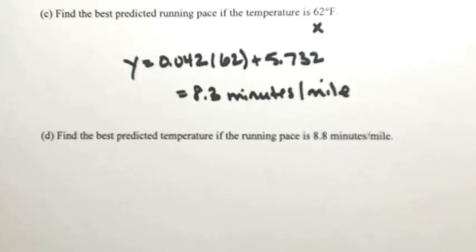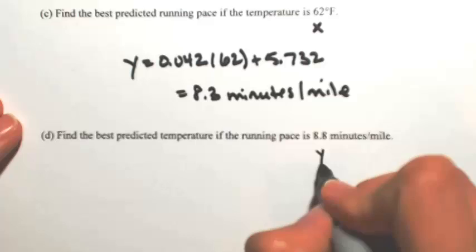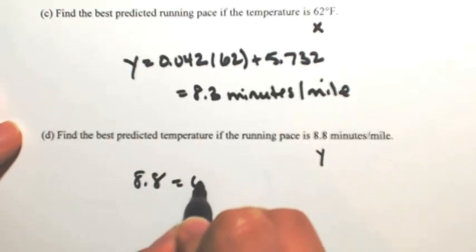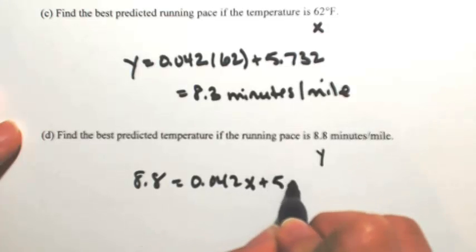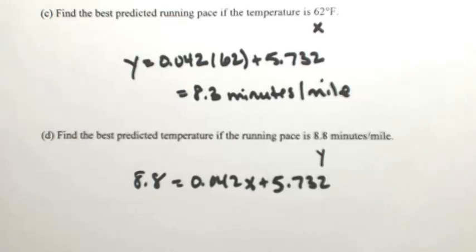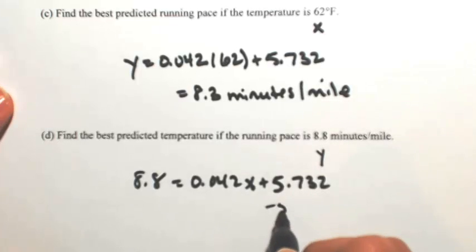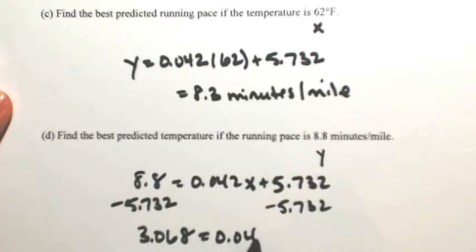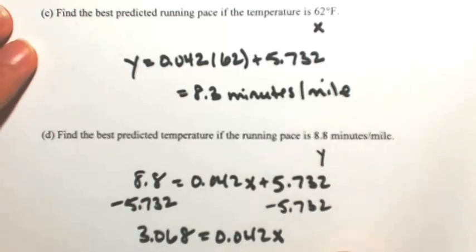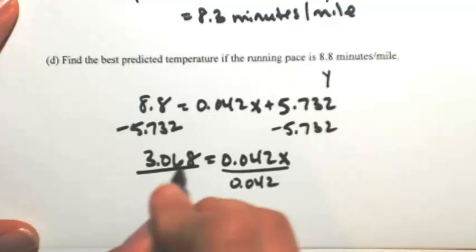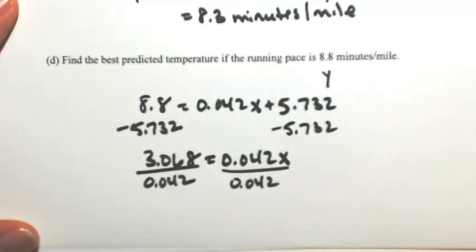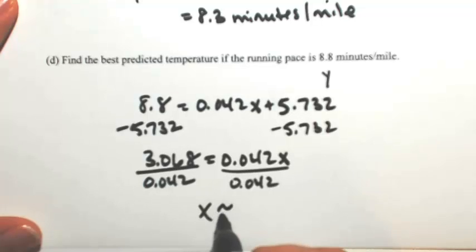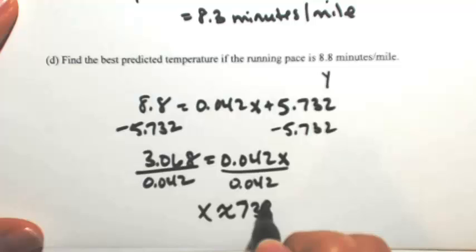Now let's say you're given the pace and want to find the best predicted temperature — this time you're given Y and need to find X. Set up: 8.8 = 0.042X + 5.732. Subtract 5.732 to get 3.068, then divide by 0.042. We find that X is about 73 degrees Fahrenheit.